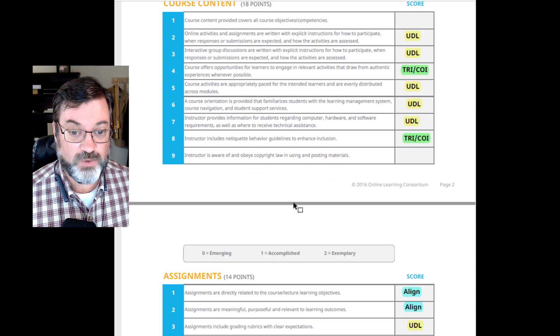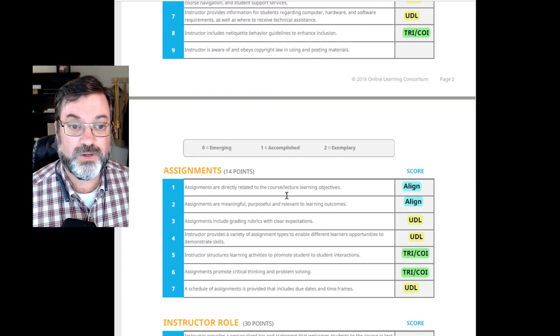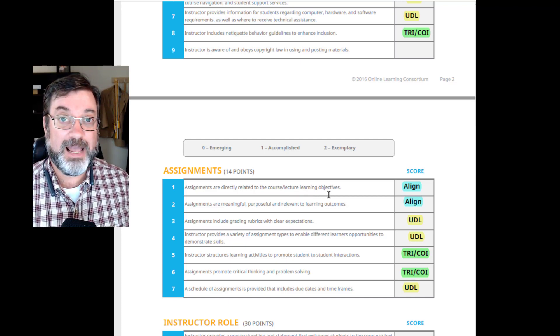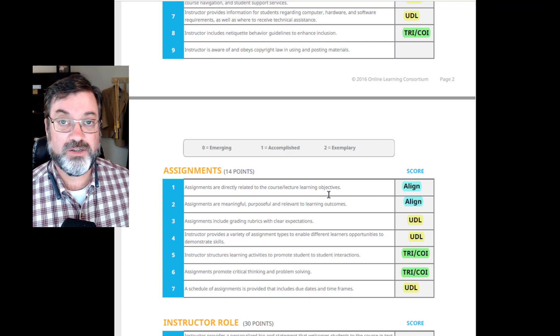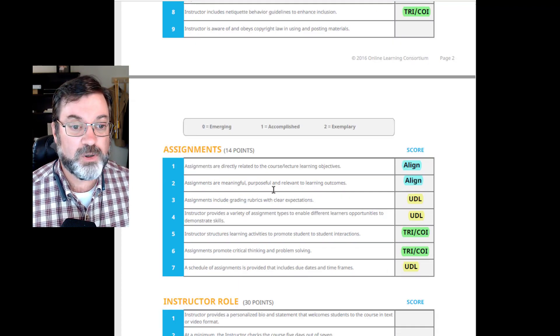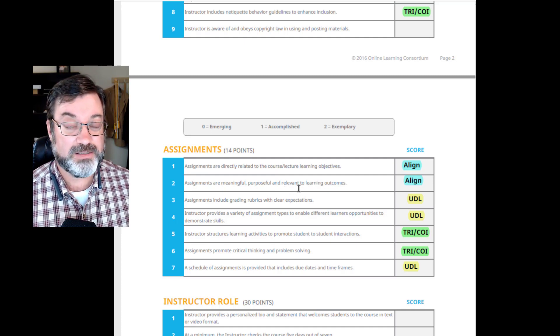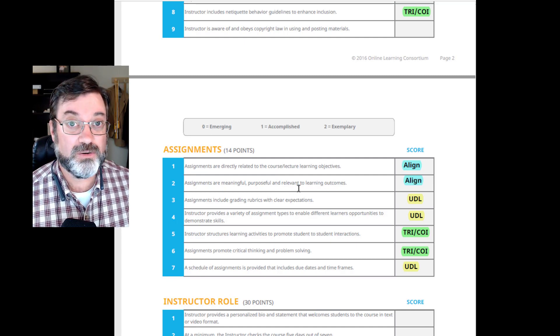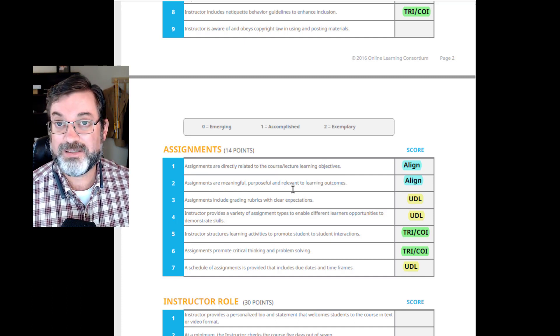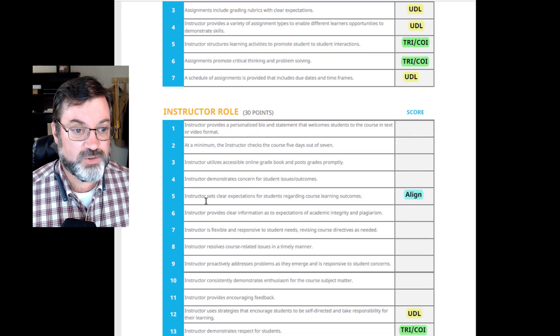These are items we've already covered. Here's a couple new ones. Assignments are directly related to the course learning objectives. If you're proceeding from outcomes to assessments, then your assignments should be aligned with your outcomes. Assignments are meaningful, purposeful, and relevant to the learning outcomes. If you're doing the process where you're stating your learning objectives, stating your module objectives, and then creating assessments that align to those, that will be covered.